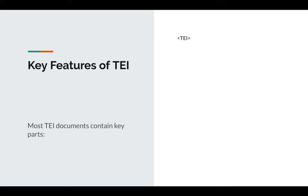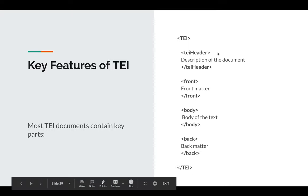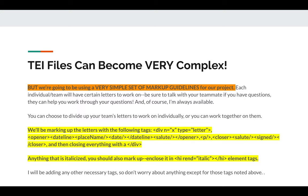Most TEI documents contain key parts. There's an overarching opening descriptor that says the thing you're looking at is TEI. There's a header that usually has lots of metadata about the document. Then in any text you might have front matter like a table of contents if you're digitizing a book, then the body of the text, and then any back matter like an index. Then you close the document itself — this is the very last thing you see, just like the opening TEI tag is the very first thing. TEI files can become super complex, but we are going to be using a very simple set of markup guidelines for our project.